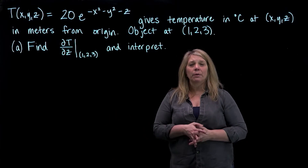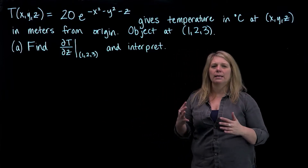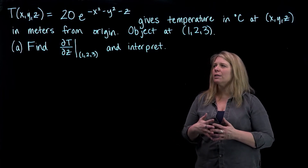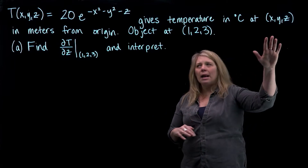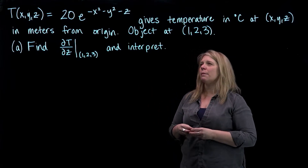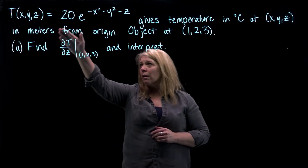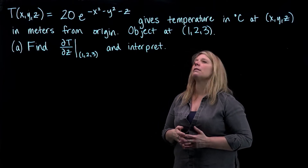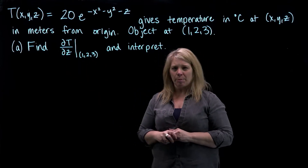We're going to look at an example here, intended to give you an idea about how some of these things might have some meaning. I have a function that gives temperature at a point measured in meters from an origin — perhaps a heat source or a base point. This function gives a numerical output when the input is a position in space, and I have an object located at some particular point. I want to find a derivative and interpret that.